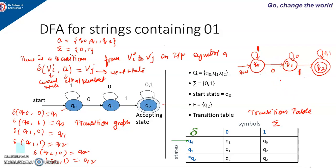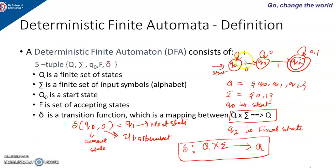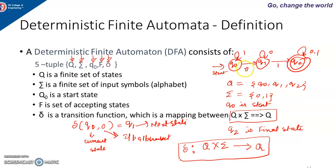Now we will see the definition of DFA. A DFA has five tuples: Q, sigma, delta, Q0, and F. Q is the set of states — here {Q0, Q1, Q2}. Sigma is the input alphabet — here {0, 1}. Q0 is the start state, and F is the set of final states. Always remember: there is exactly one start state, but there can be at least one or more final states. For this example, Q0 is the start state and Q2 is the final state.